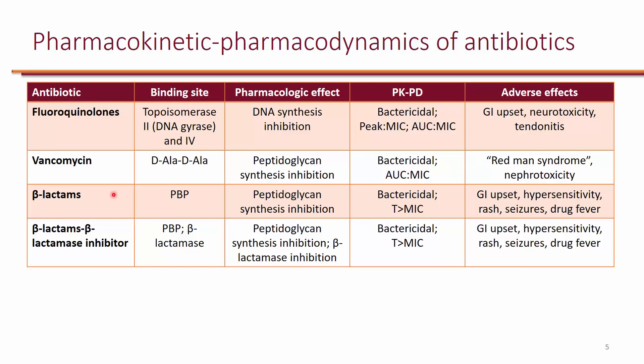Beta-lactams — such as penicillins, cephalosporins, carbapenems, and aztreonam — are available, most of them as IV, but many penicillins and cephalosporins are also available orally. Carbapenems and aztreonam are strictly IV with no oral formulation. Beta-lactams generally cause GI upset and hypersensitivity; penicillin allergy is the most common drug allergy. They can cause skin rashes, seizures in high doses, and occasionally drug fever.